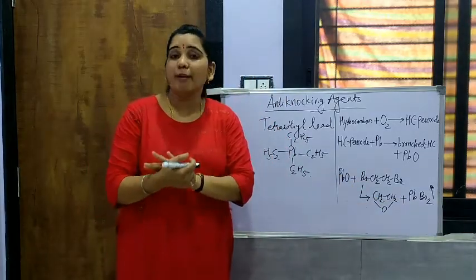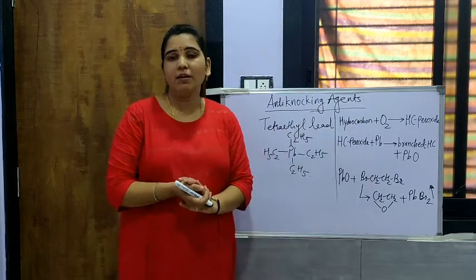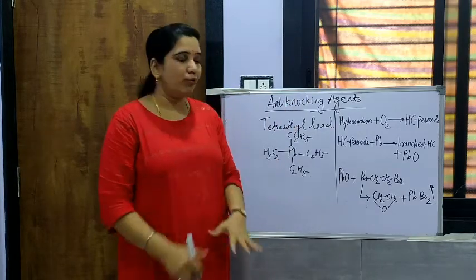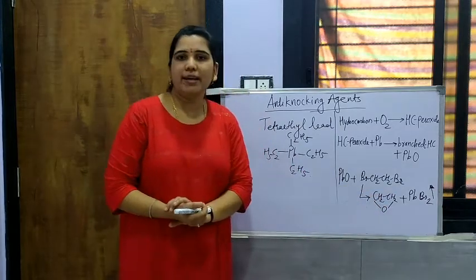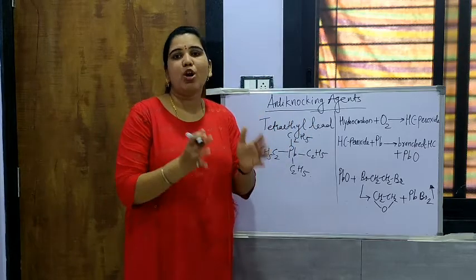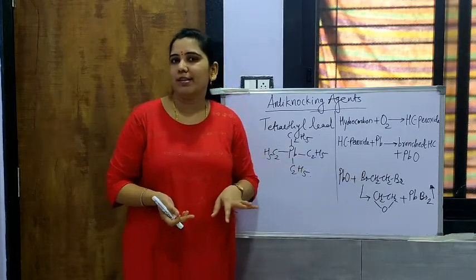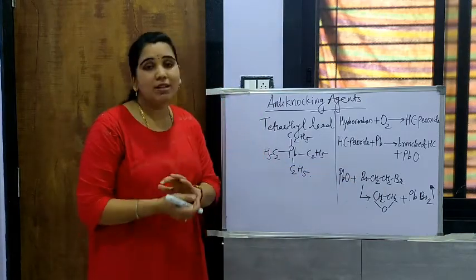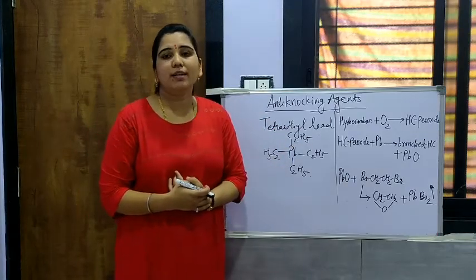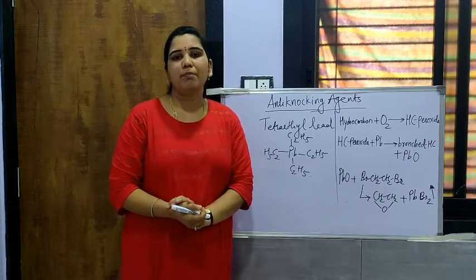Particularly, whenever the presence of sulphur is maximum in the fuel — that is the hydrocarbon — it reduces the effect of this lead. So there must be a less amount of sulphur present. The lead bromide which is produced is, at the particular temperature of the cylinder in the internal combustion engine, volatile. So in this way it gets volatilized. In this way we can use tetraethyl lead or tetramethyl lead as an anti-knocking agent, which reduces the knocking tendency of the internal combustion engine.